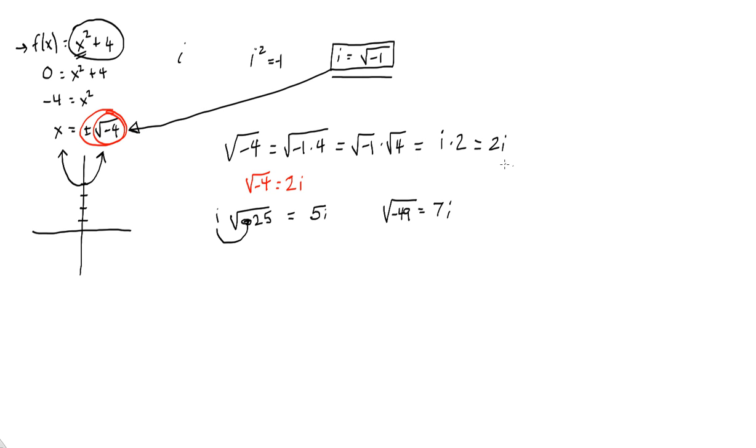So all you need to remember is take out the negative, write an i, and then treat your radical the way you would normally treat a radical. But what if the radical is not of a perfect square? What if I said had the square root of, say, negative 8?